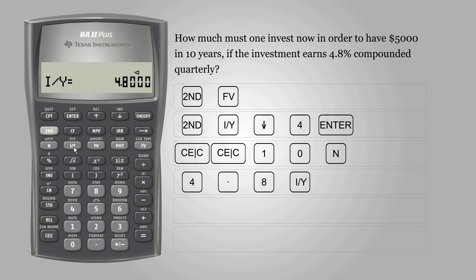Finally, enter 5000 and press FV for future value.